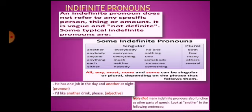Indefinite pronouns. An indefinite pronoun does not refer to any specific person, thing, or amount — it is vague and not definite. Some typical indefinite pronouns are given in a chart: singular and plural, such as another, everybody, no one, both. For example: 'He has one job in the day and another at night' — here 'another' is a pronoun. 'I would like another drink, please' — here 'another' is an adjective.